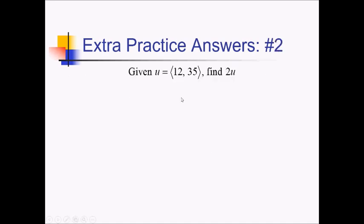For this problem, we're given this vector in component form, and we want to figure out what 2u is. So we're just going to plug this component form in for u — 2 times vector 12 comma 35. This is just a situation where we distribute the constant, so this is going to be 24 comma 70.